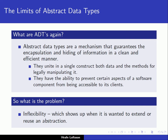Let's recall our definition of the abstract data type. We can summarize it by saying that abstract data types are a mechanism that guarantees the encapsulation and hiding of information in a clean and efficient manner. Encapsulation allows us to unite in a single construct both data and the methods for legally manipulating it. We encapsulate the data and the methods inside some kind of a capsule — that's encapsulation.